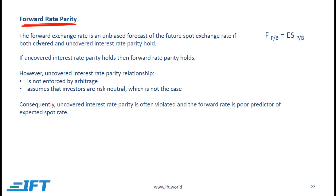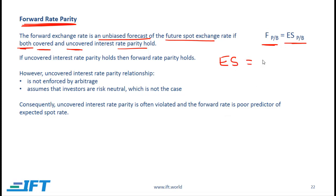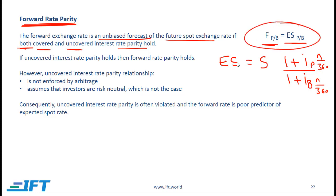Forward rate parity states that the forward exchange rate is an unbiased forecast of the future spot exchange rate if both covered and uncovered interest rate parity hold. If both relationships hold, then the forward exchange rate equals the expected spot rate. The expected spot rate equals the spot rate times (1 plus the price currency interest rate) over (1 plus the base currency interest rate), with an N/360 adjustment for periods other than one year.